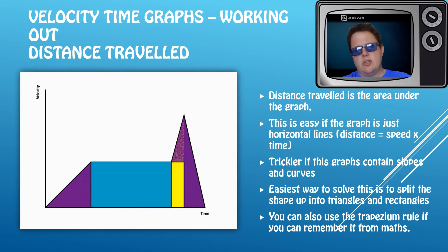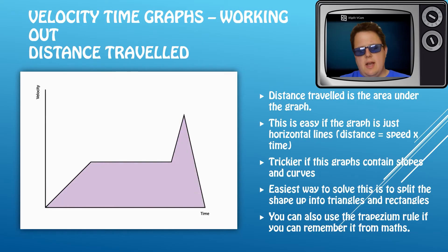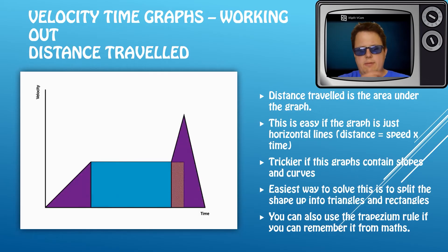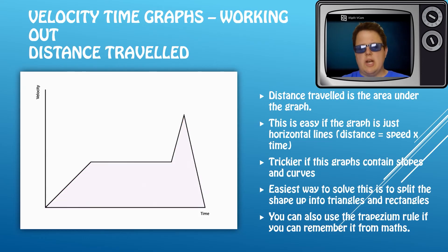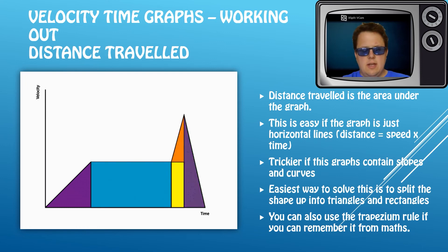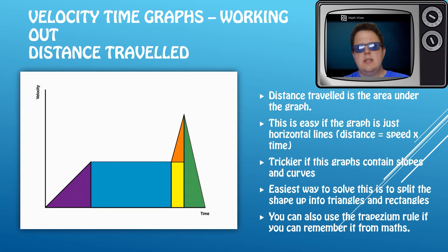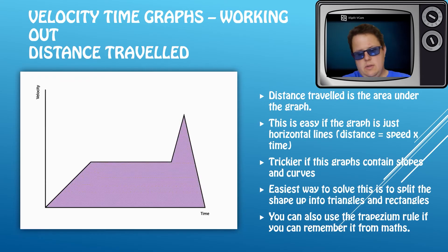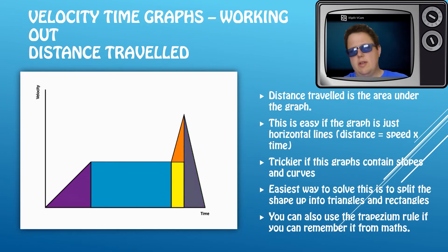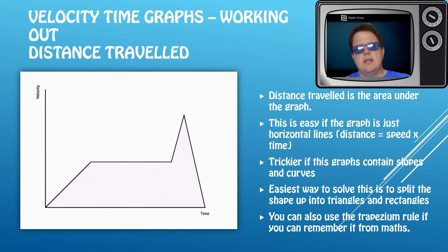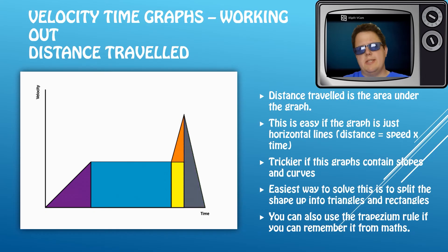Here I'm showing how to work out distance traveled from a simplified graph. I split it up into different shapes: first a big rectangle in the middle, then a triangle on the left-hand side, and a triangle on the right-hand side — the right-hand triangle I split further into a rectangle and two smaller triangles. I then work out the areas of each shape. If you know your trapezium rule from maths, you could use trapeziums instead. You can also count squares — just work out the value of one square then count them — but that can take a long time. Both methods are valid, but remember this skill is only on higher tier papers.